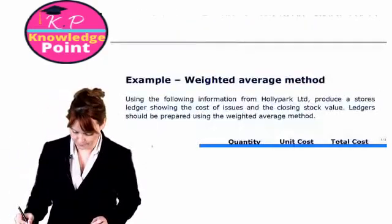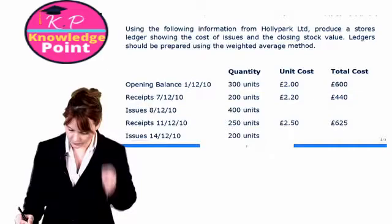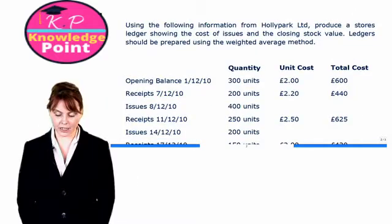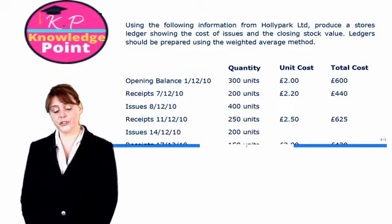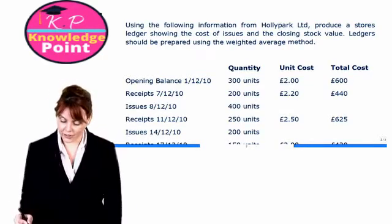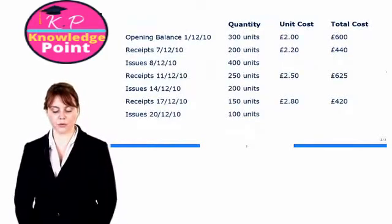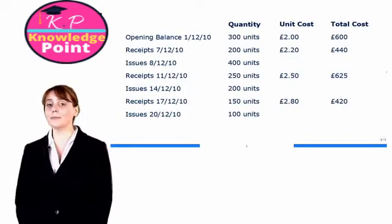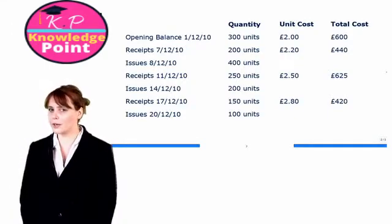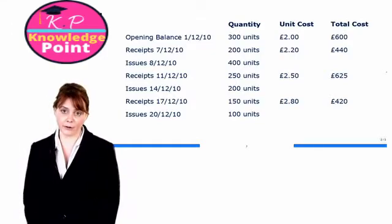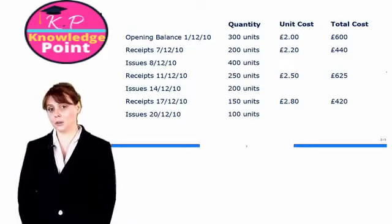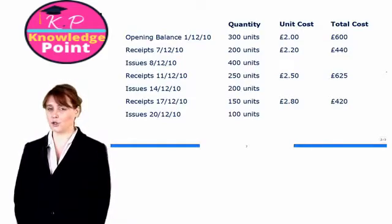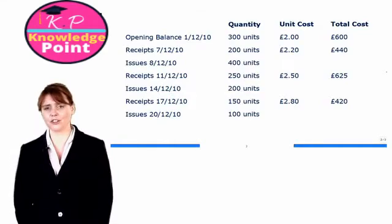Let's have a look at a question. We are asked, using the following information from Holly Park Limited, to produce a stores ledger showing the cost of issues and the closing stock value, prepared using the weighted average method. We are given all inventory movements for December 2010. Our calculations and table under the weighted average method are far more straightforward than under the FIFO and LIFO methods, because we don't need to keep track separately of different batches of material received.